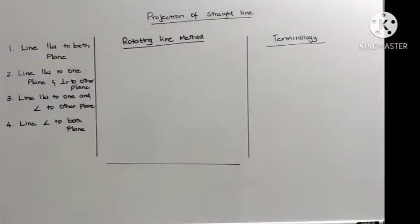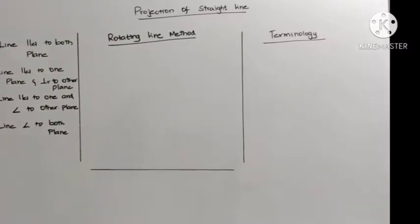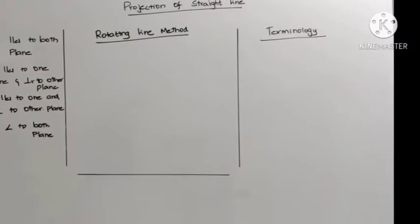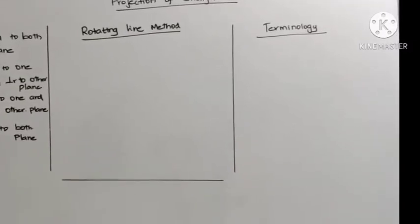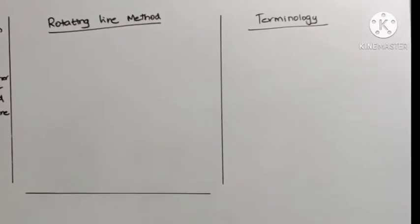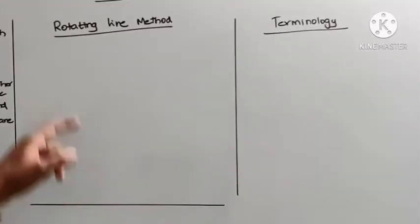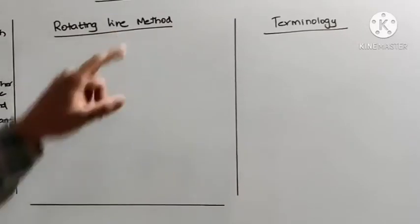In the projection of straight lines, we will start with the view where the true length is visible, and from there we will draw the projected length. Whereas in this particular case — case 4 — the true length will not be visible in either the front view or the top view. So in order to obtain the projection of front view and top view, we will be using a method called the rotating line method.